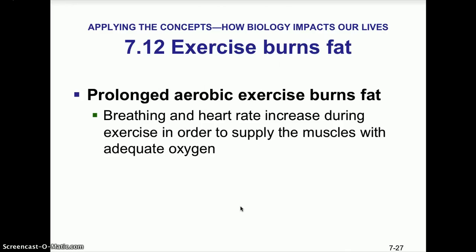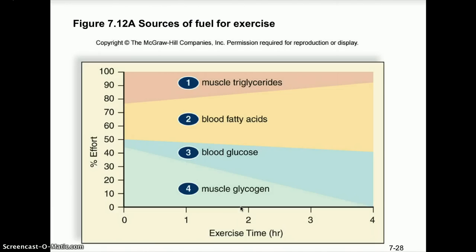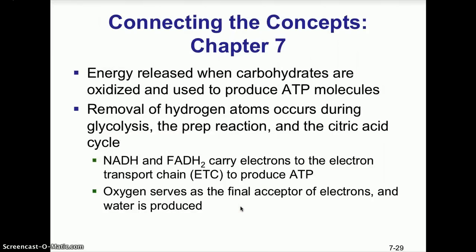Exercise does burn fat — prolonged aerobic exercise burns fat. Breathing and heart rate increase during exercise in order to supply the muscles with adequate oxygen. There's a chart showing the sources of fuel for exercise: first, muscle triglycerides; second, blood fatty acids; third, blood glucose; and fourth, muscle glycogen. You can look at the exercise time per hour and the percent effort for each of those molecules during extended exercise. That wraps up our chapter on cellular respiration — we'll have more discussion and related activities, so start studying for your next test.